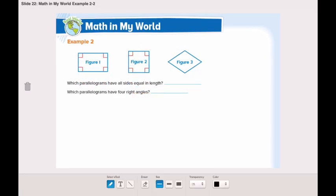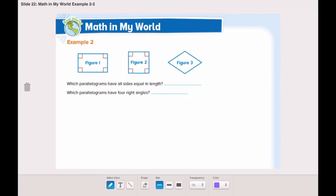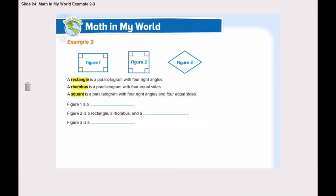Now let's answer the questions according to what we've learned about quadrilaterals. Which parallelograms have all sides equal in length? Figures two and three. Which parallelograms have four right angles? Figures one and two. So we have three types of parallelograms: rectangle, rhombus, and square.